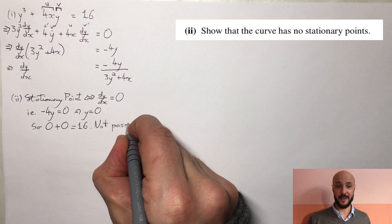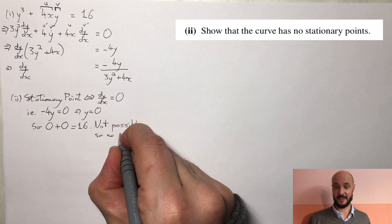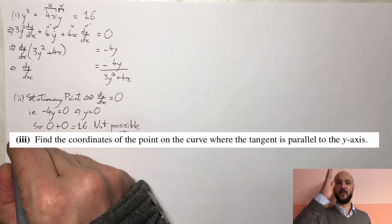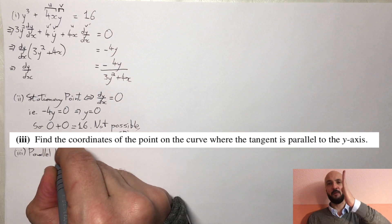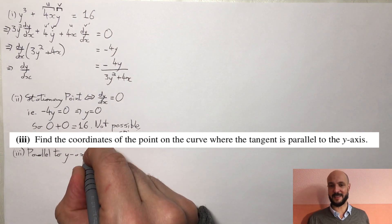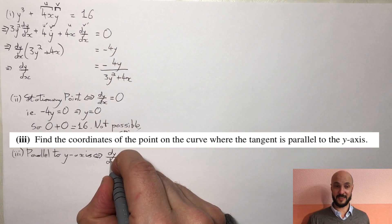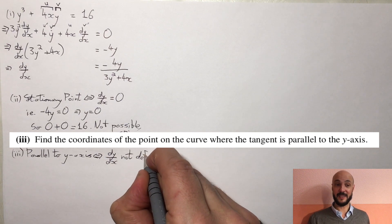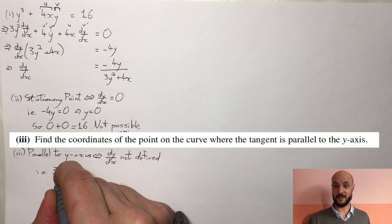The third part we want to find the point on the curve where the tangent is parallel to the y-axis. So if we think of what it means to be parallel to the y-axis, well that means that our gradient is not going to be defined because if we're parallel to the y-axis it's going straight up which means your gradient is like infinity. So we want the point where the gradient is not defined, so that's going to be in our case where we're dividing by 0 in our fraction, so we want 3y squared plus 4x to equal 0.